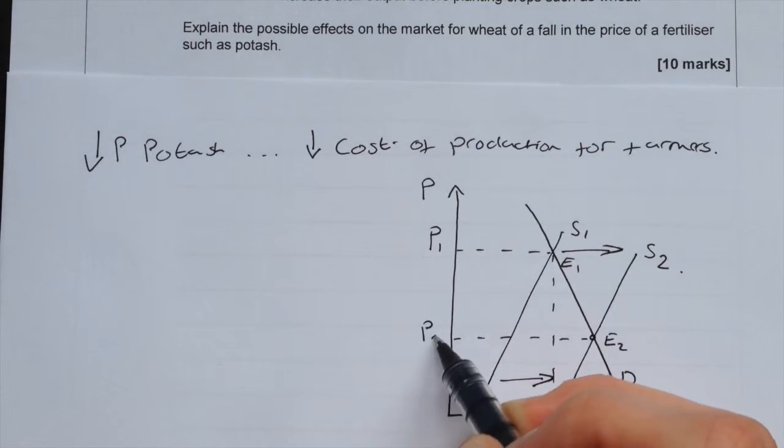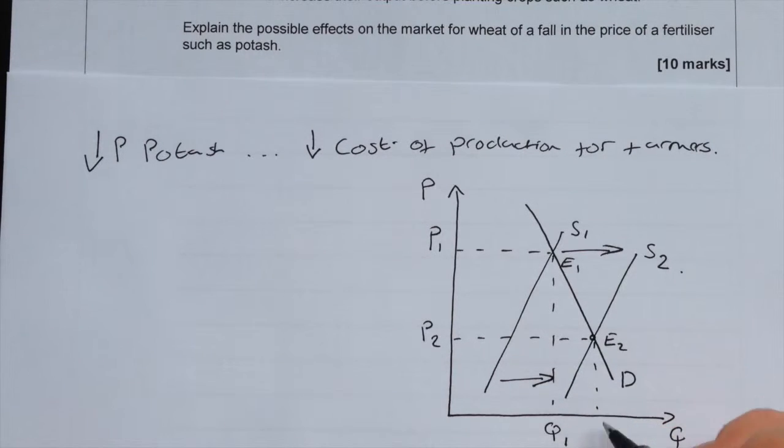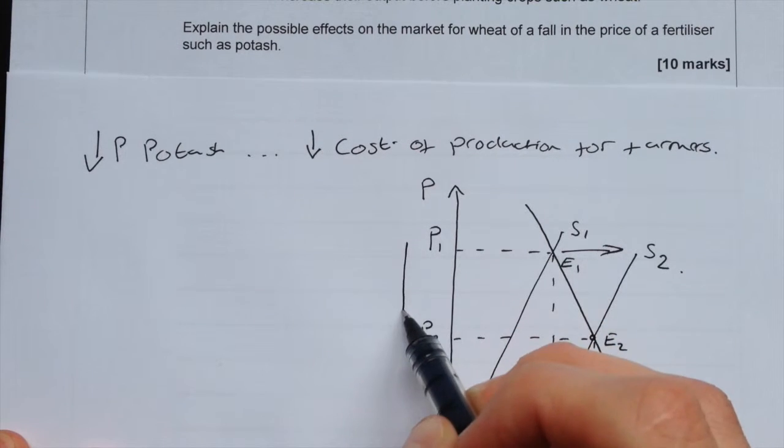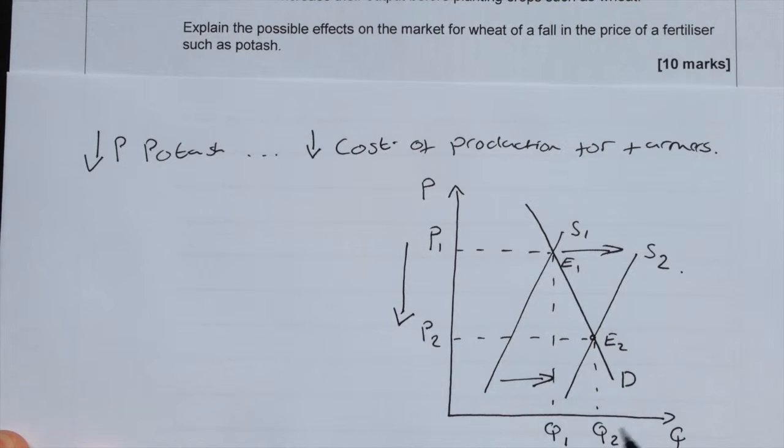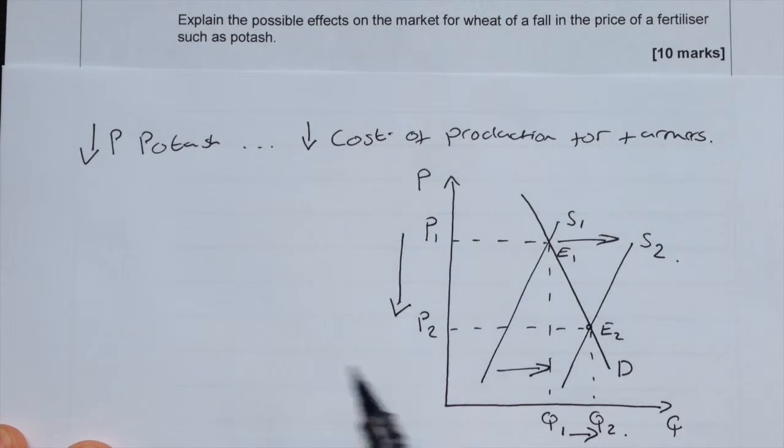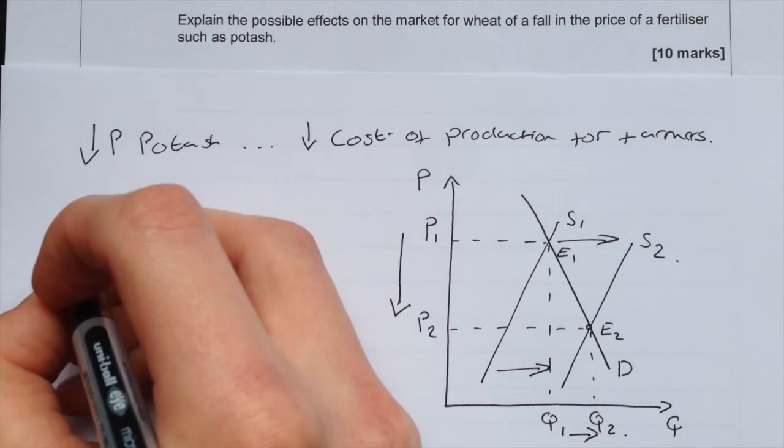This is at price P2 and Q2. So the effect in the market would be to decrease the price of wheat and to increase the quantity of output. We have a decrease in price and an increase in quantity.